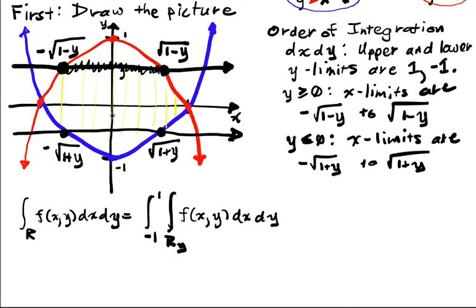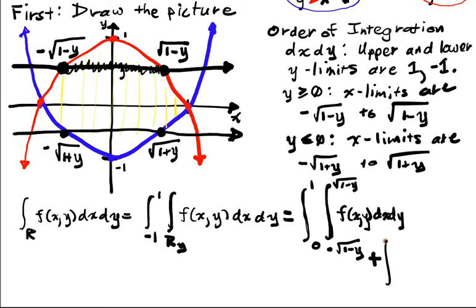And of course, this R sub y depends on whether this guy is above 0 or below 0. So the next thing I'm going to do is I'm going to break up this integral from 0 to 1. Now I have well-defined limits. So this will be from negative square root 1 minus y to square root 1 minus y,